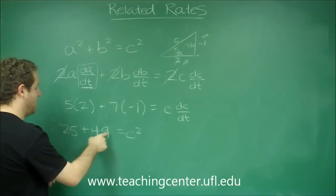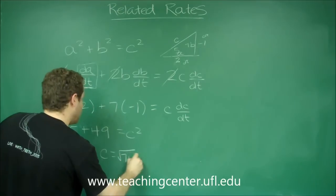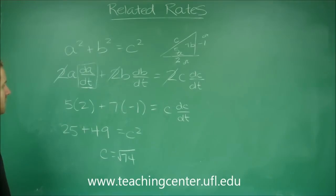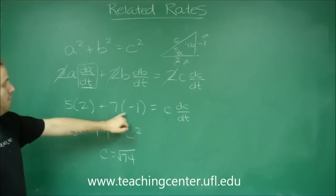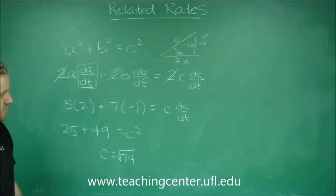So this would be 74 equals C squared, which is not a perfect square so I'll just leave it like that. And finally you can solve for DC DT this way. We would have 10 minus 7 which would be 3, and 3 divided by this square root of 74.